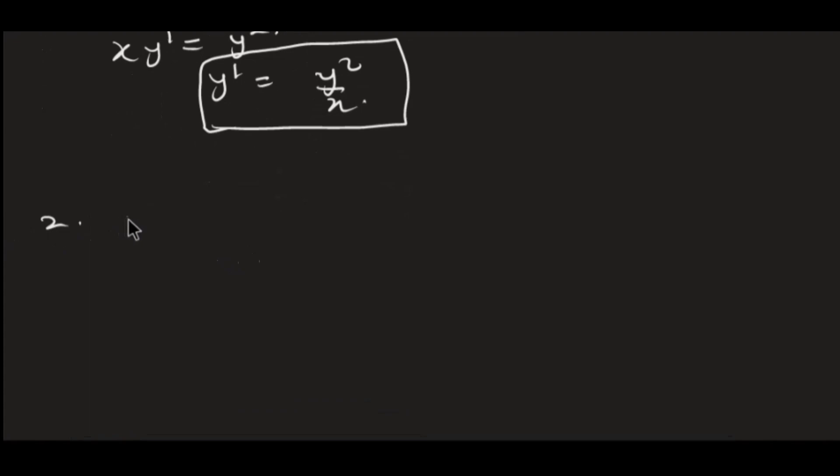Number 2. I have e^x y' plus e^(2x)y is equal to sin x. We have to express this in the standard form. Meaning, we have to make this the subject. So e^x y' will be equal to sin x minus e^(2x)y. At this point, I can make my y' the subject by dividing through by e^x.